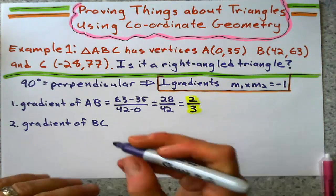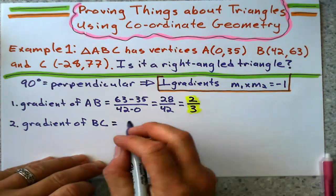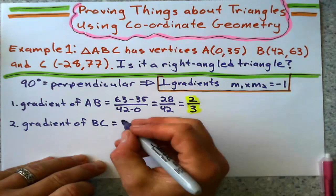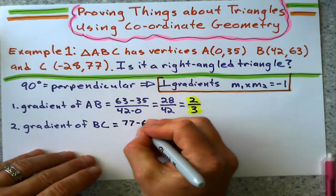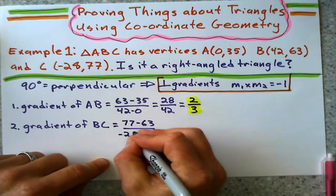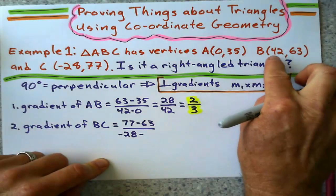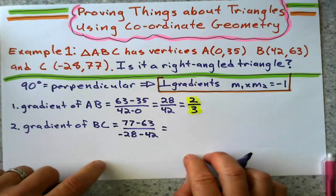So if the gradient of this is negative three-halves, I'm good. What's BC here? Change in Y, 77 minus 63 over change in X, negative 28 minus 42. What's going to be negative? What do I get?